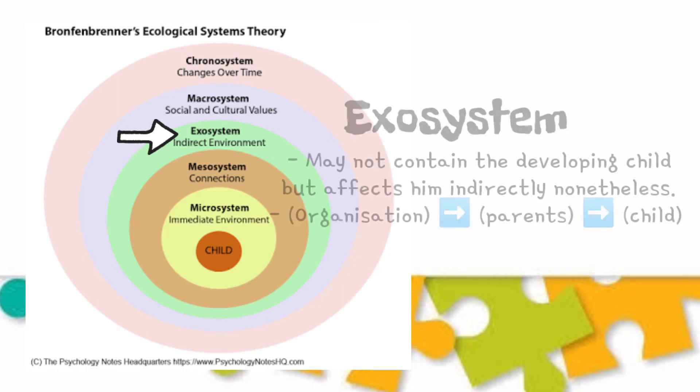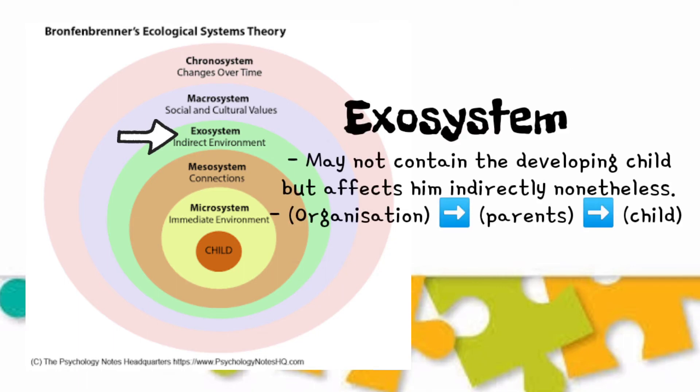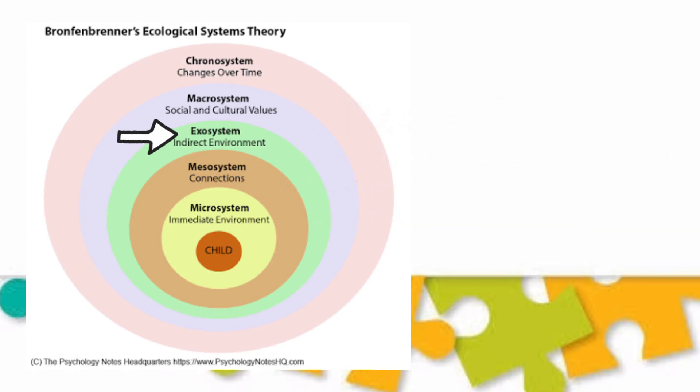The exo-system involves relationships that may exist between two or more settings, one of which may not contain the developing child but affects him indirectly nonetheless. For example, these organizations first affect the person inside the micro-system, and the person in the micro-system will surely affect the child as it goes.